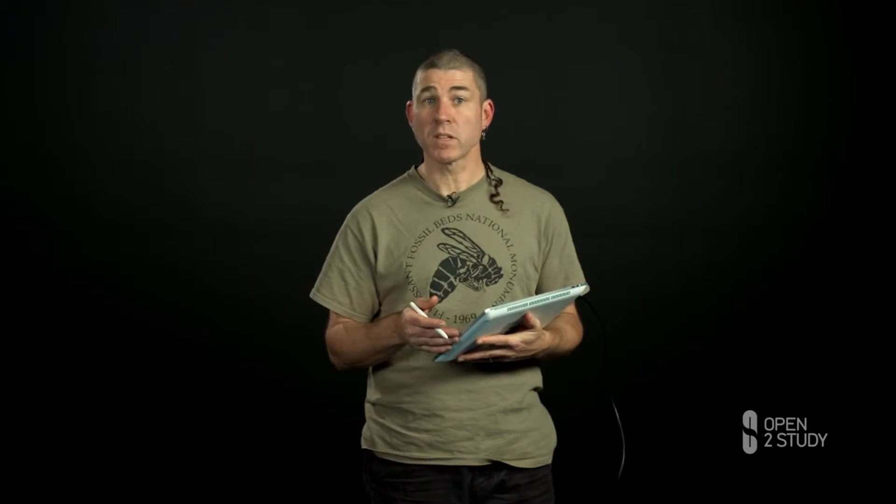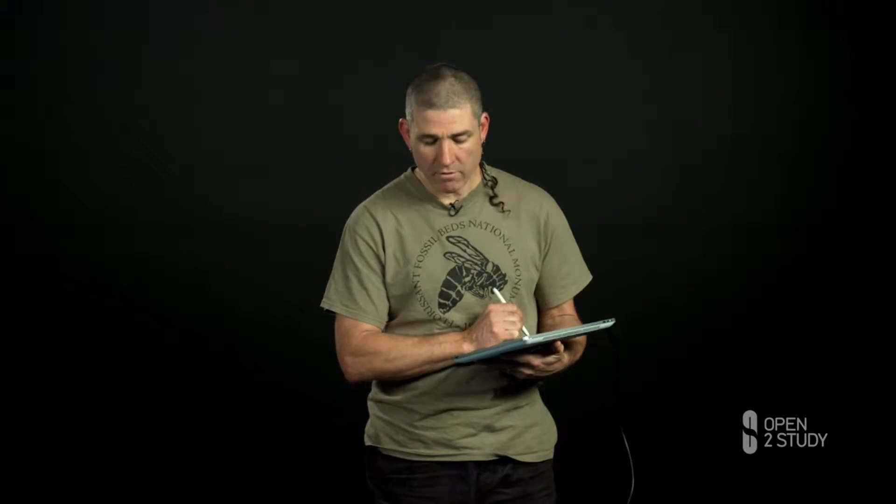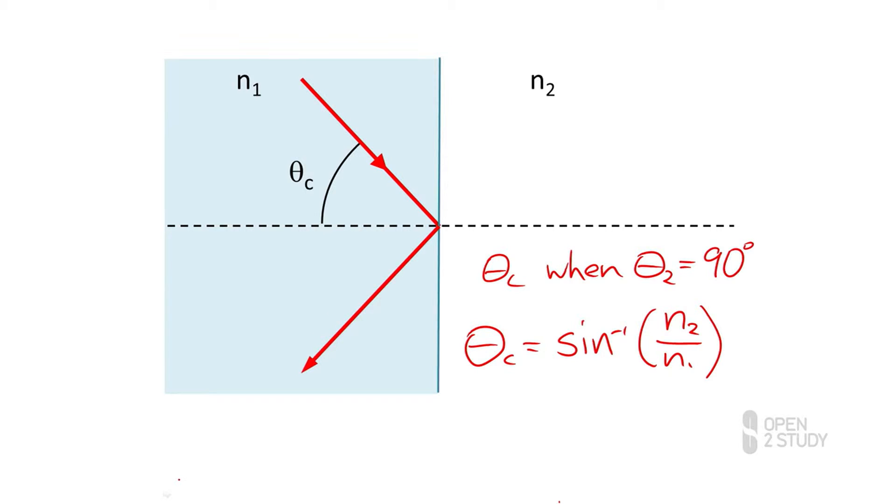Now for values like going from glass into air, that's an angle of around 40 degrees. So any angle that is larger than that for the incident ray in the glass, it can't escape the glass. It gets trapped in, and in fact all you have is the reflected ray. We call this type of refraction where there isn't a refracted beam, we call this total internal reflection.